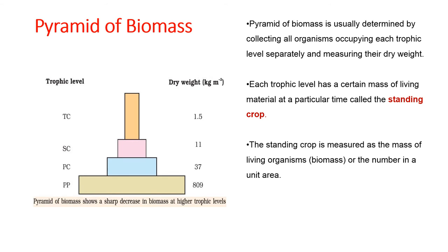In a grassland ecosystem, the number of producers is more, so their dry weight per square meter will be more — depicted as 809 kg per square meter. Primary consumers, which are herbivores, have a reduced dry weight of 37 kg because their population is less compared to producers. Secondary consumers have a dry weight of 11 kg per square meter, and tertiary consumers have 1.5 kg per square meter. The pyramid of biomass is usually determined by collecting all organisms at each trophic level separately and measuring their dry weight.